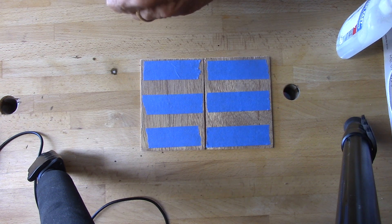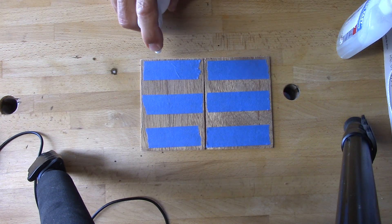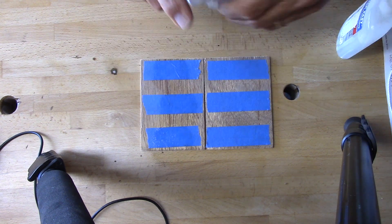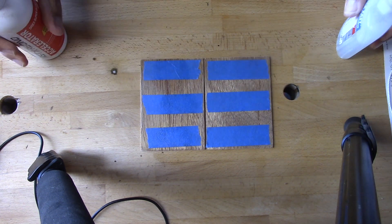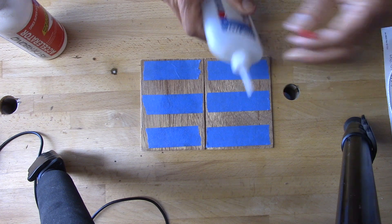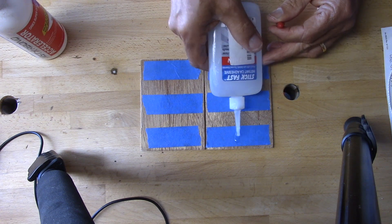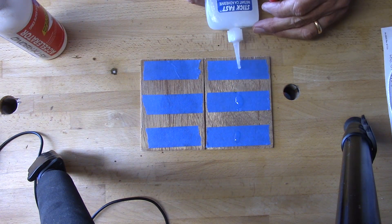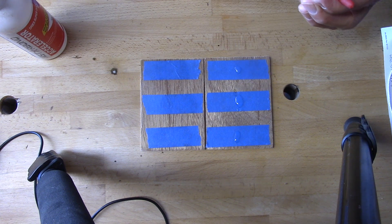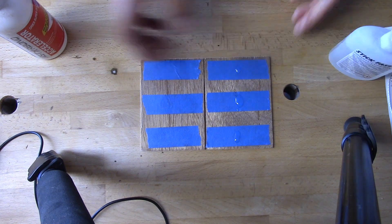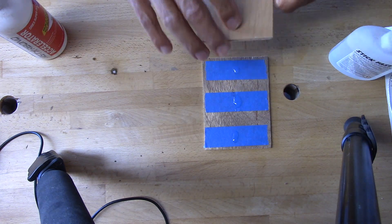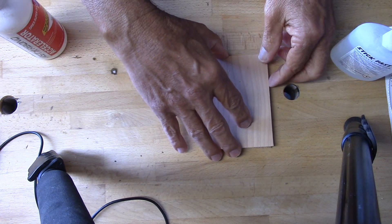This is a trick you've probably seen in some of my other videos. I'm going to put some accelerator for super glue on this half and then put a little drip of super glue on the blue tape on this half. I'll very carefully take these two pieces and make a sandwich.